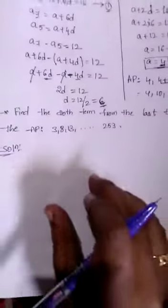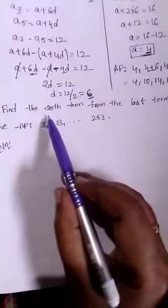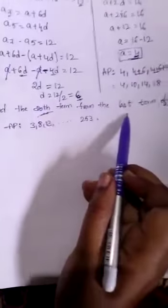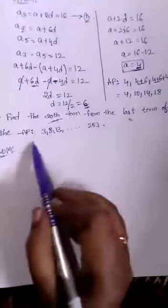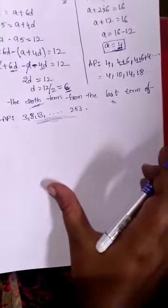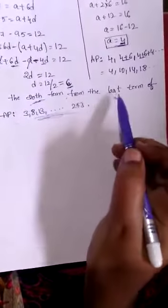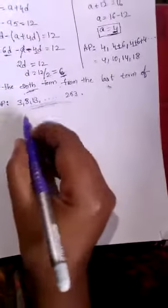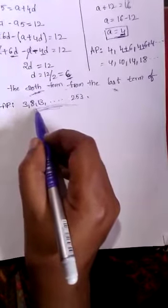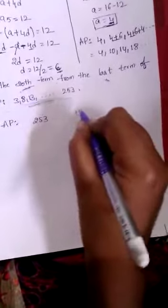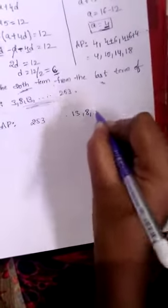Next problem: find the 20th term from the last term of an AP. The given AP is 253 ... 13, 8, 3. We have to find the 20th term not from the starting but from the last term of the AP. The better approach here is to reverse the AP.